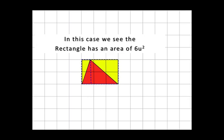In this case, we see the rectangle has an area of 6 units squared. You can count the 6 squares inside the rectangle. It's 2 units high, it's 3 units at the base. That gives us an area of 6 units.